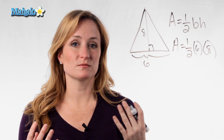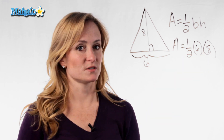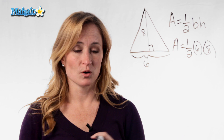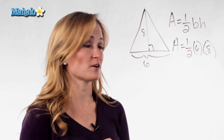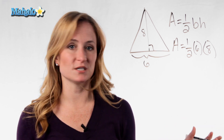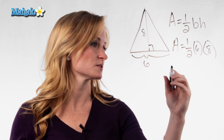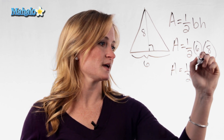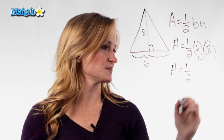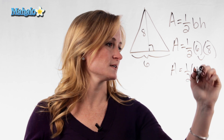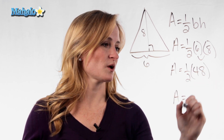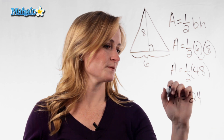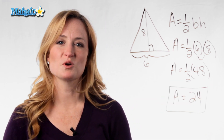Most people when looking at this problem would start and multiply the whole numbers first, and that's fine. Order of operations doesn't really matter here because we're just multiplying — no addition, no subtraction. So let's go ahead and multiply. Eight times six is 48, and then finish the problem out. Half of 48 is 24, and there's the area of our triangle.